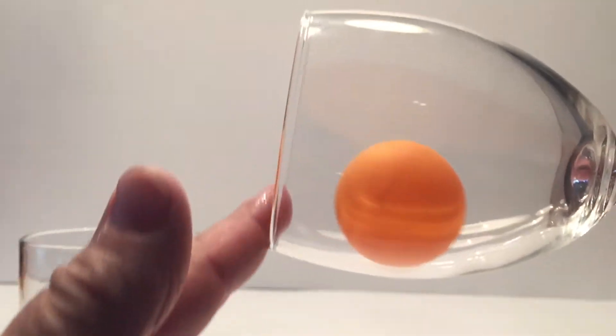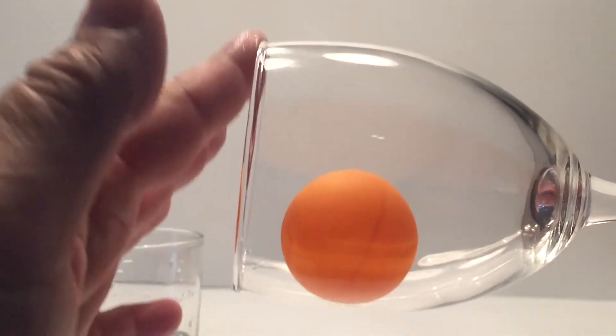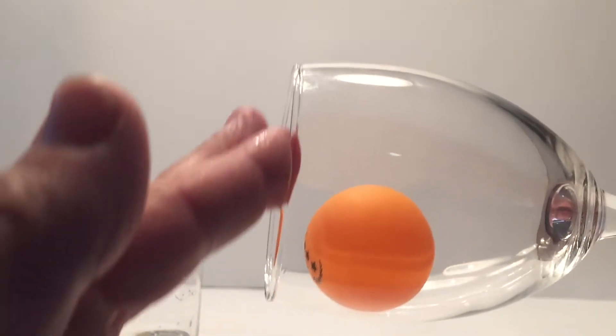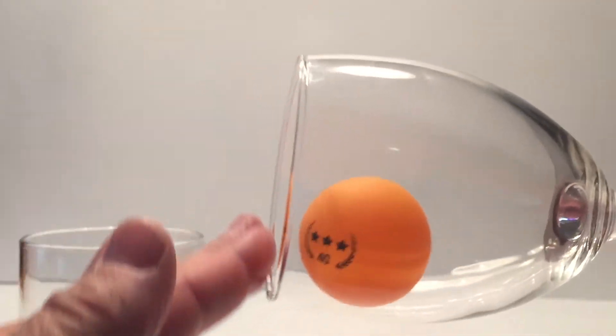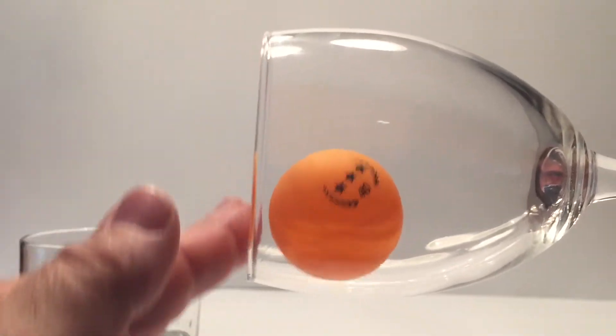Well, why does this happen? Well, the glass has a natural frequency when it vibrates. When you rub your damp finger on the outside of the glass, your finger sticks to the glass because of friction.